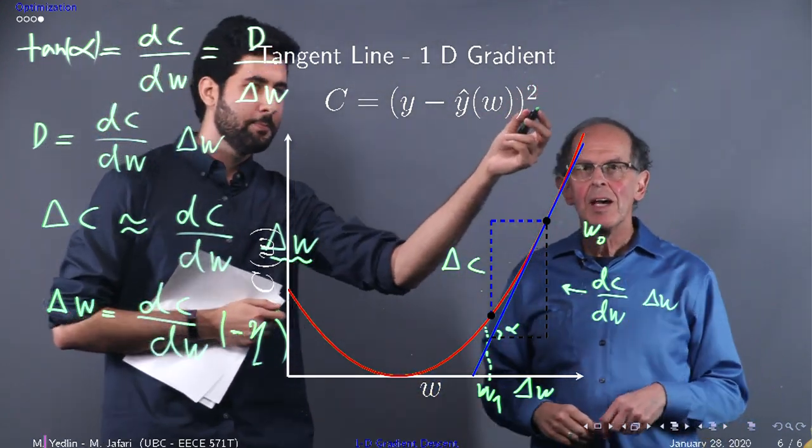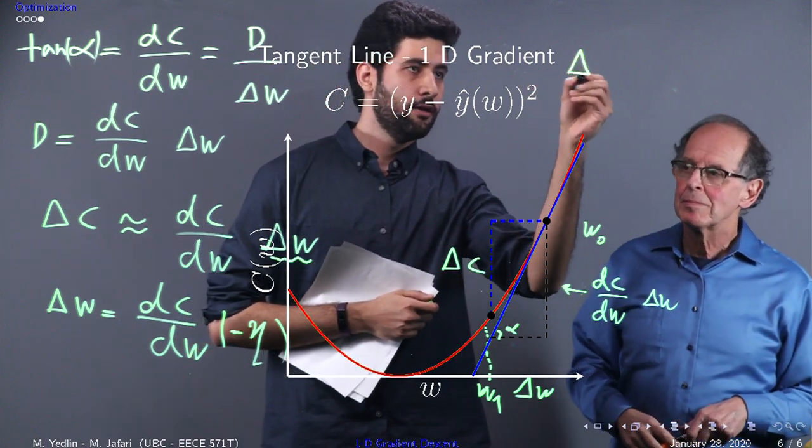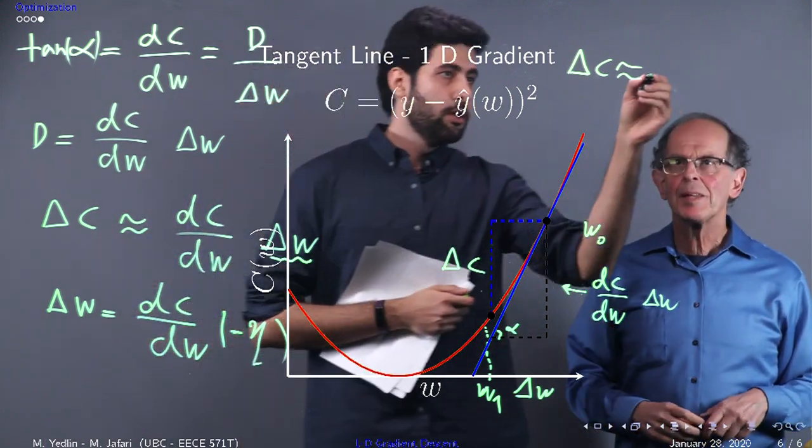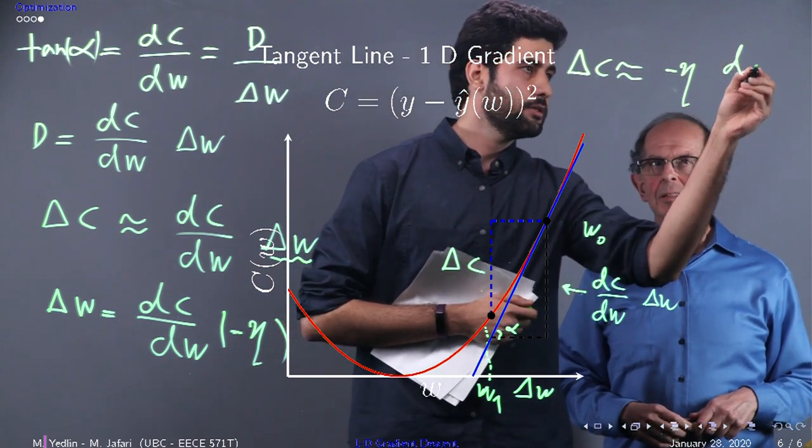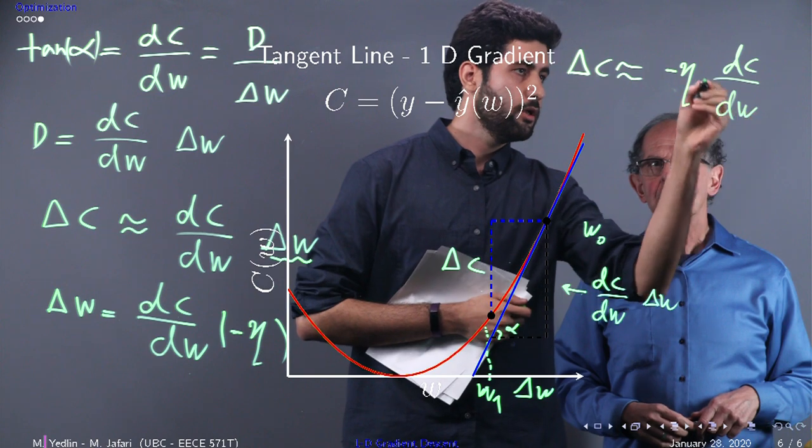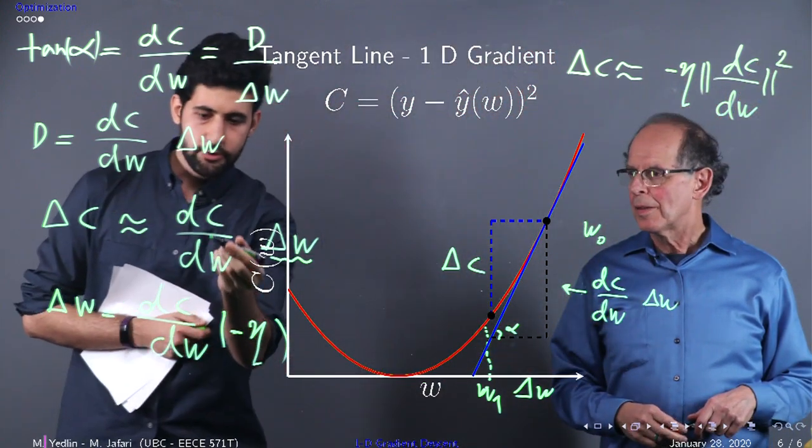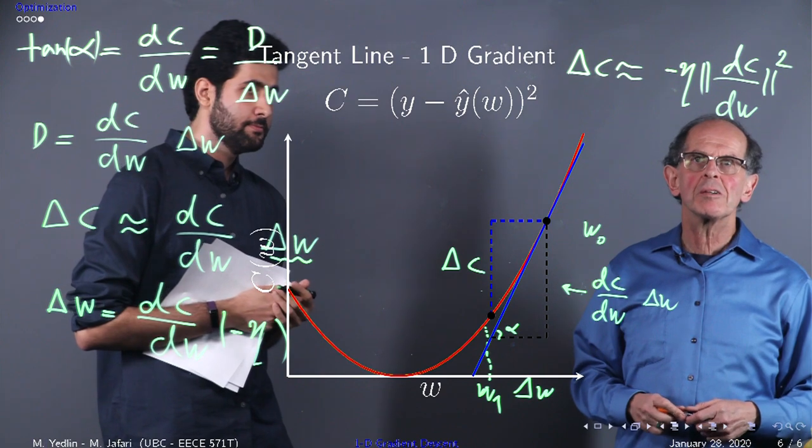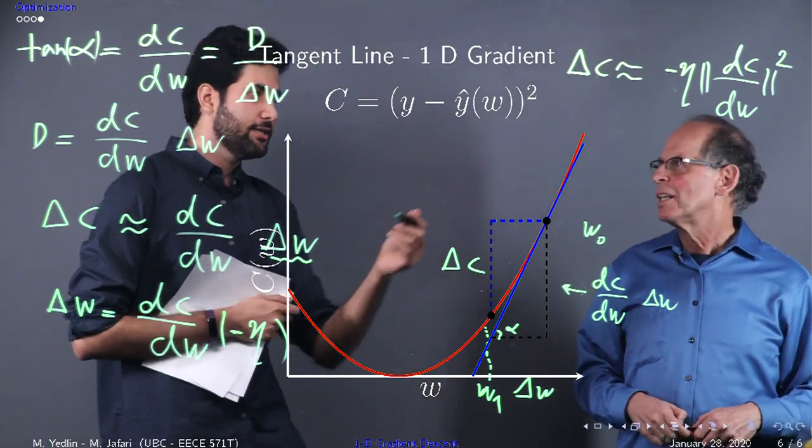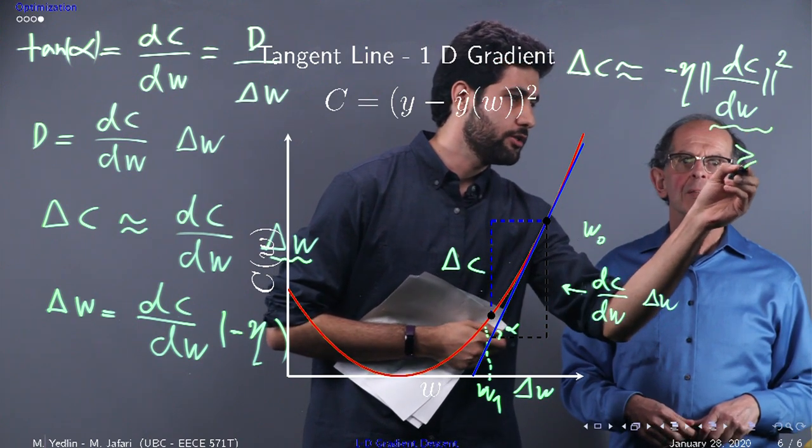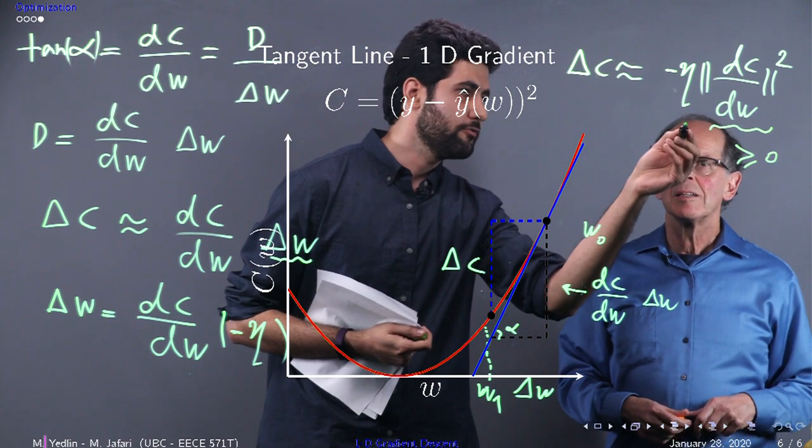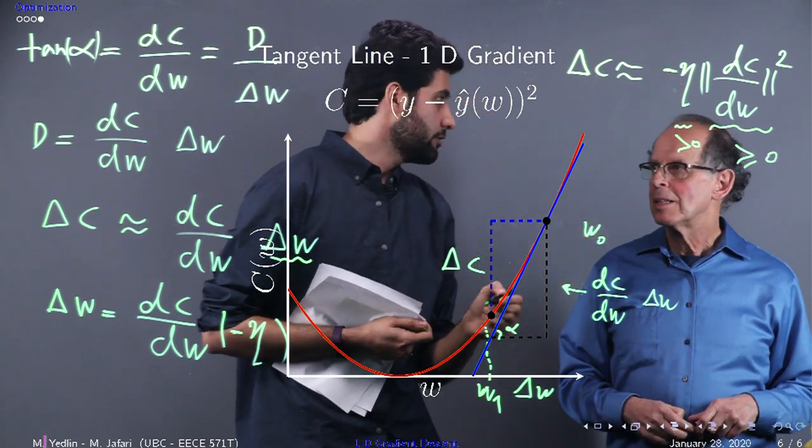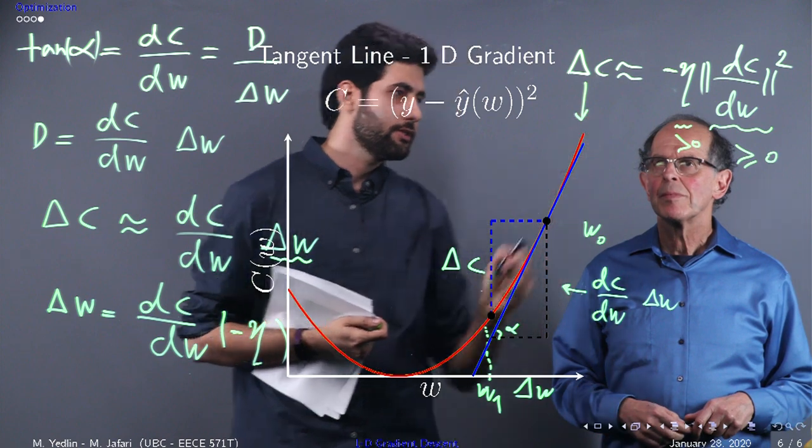If we plug this delta w into this equation, let's have a look. Delta C approximately equals minus eta times (dC/dW) squared, since this would be multiplied. Now can you tell me something about delta C? Are we sure that it's going to be decreasing? Exactly. The point is this part is greater than or equal to zero. So if we have a positive learning rate here, which is greater than zero, delta C would be decreased. Fantastic.